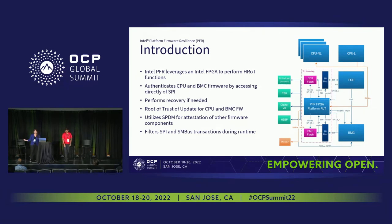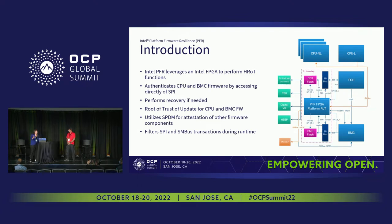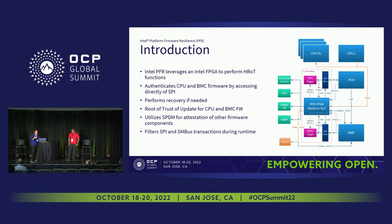One implementation we created at Intel as a reference is Intel PFR. We created it on Intel FPGA, and this is an architecture diagram of how the platform root of trust looks. It has connections through the SPI mux to both the CPU flash and the BMC flash, and that is how it can authenticate the firmware on the flash and also do a recovery if needed.